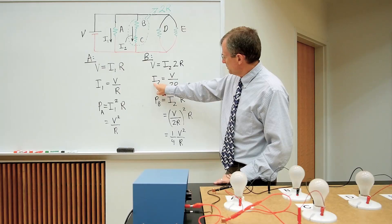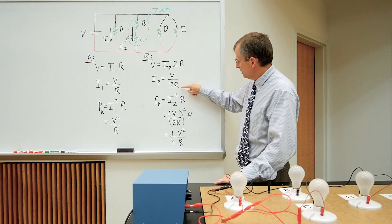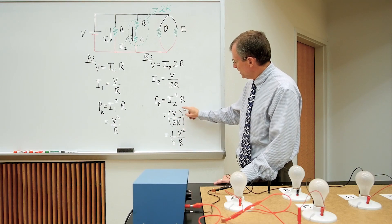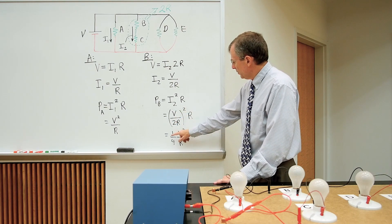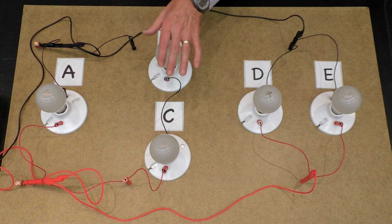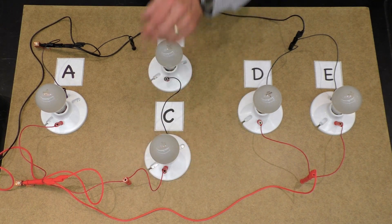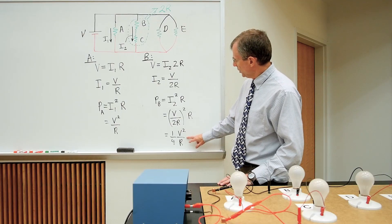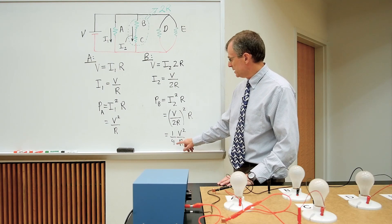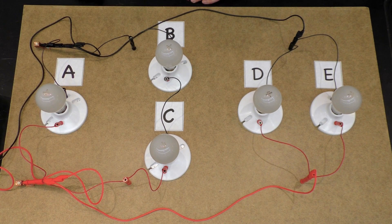So, we'll substitute in I2, we have to square that, it'll be V squared over 4 times R squared. Plugging it in here with V squared over 4 R squared, we get 1 fourth V squared over R. That's the power dissipated in this bulb B. We'll get exactly the same result for the power dissipated in bulb C. But what you'll notice is that the power dissipated in either one of these bulbs is only one quarter of the power dissipated in bulb A.